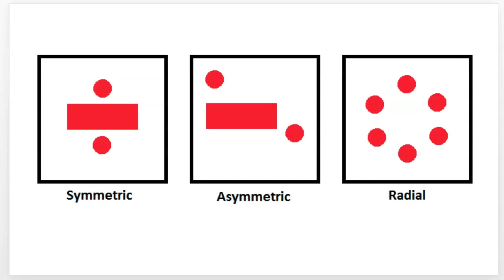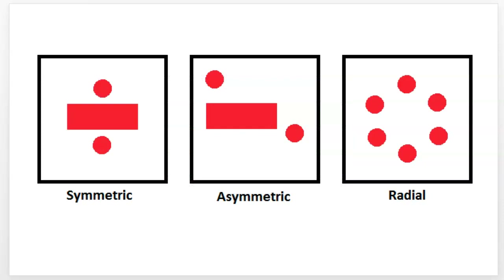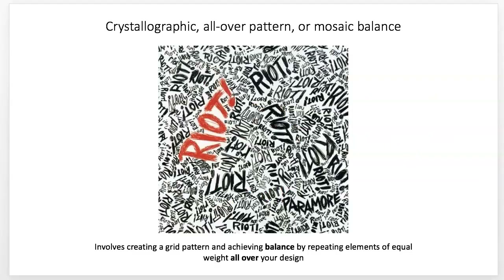So, types of balance. We have symmetrical, asymmetrical, radial, and also all-over or crystallographic balance — also called mosaic balance or all-over pattern. This creates a grid and pattern by having an element go all over, giving weight across the whole design. So those are the four types. Let's break them down so we have a clear idea of what each one means.